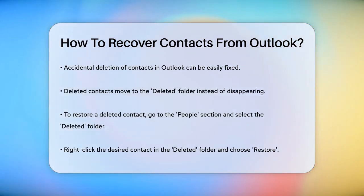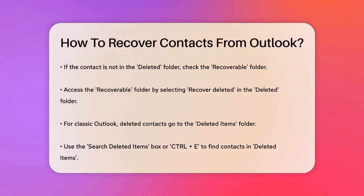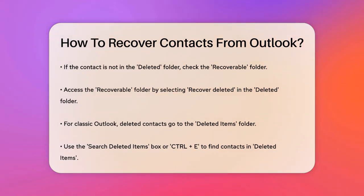But what if the contact is no longer in the Deleted folder? In this case, you need to check the Recoverable folder. This folder is where contacts go if you've emptied the Deleted folder or permanently deleted a contact by pressing Shift-Delete. To access it, go to the People section, select the Deleted folder, and then click on Recover Deleted at the top of the list. Here you can select the contact you want to recover and click Restore.